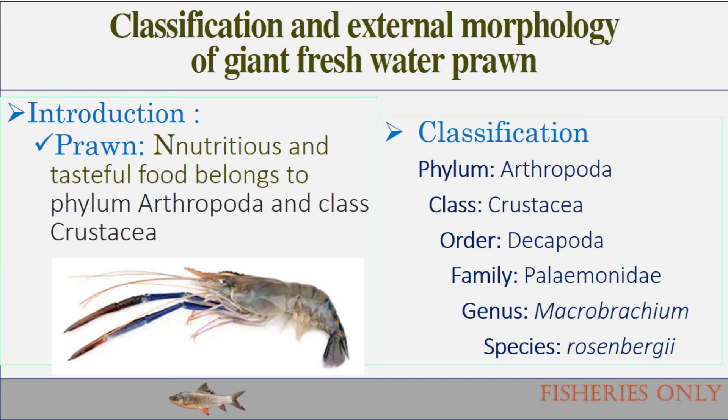Prawns are nutritious and tasteful foods for human beings, which belong to the phylum Arthropoda and class Crustacea. They are distributed throughout India mostly in freshwater. Their life cycle requires brackish water in the early developmental stages.